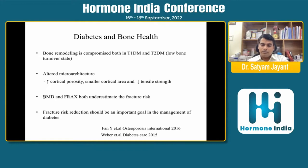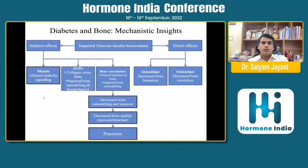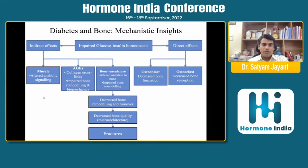Fracture risk reduction should be an important goal in management of type 2 diabetes, alongside other goals like blood pressure, cholesterol, LDL, and TG control. The mechanistic insight of bone disease in diabetic patients occurs due to impaired glucose-insulin homeostasis, with both direct and indirect effects — directly impairing the function of osteoclasts and osteoblasts.